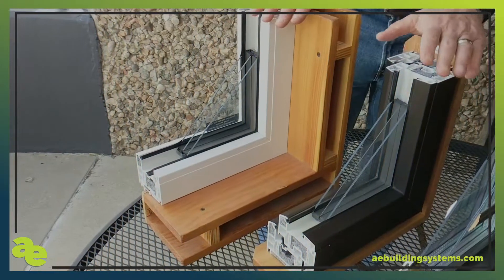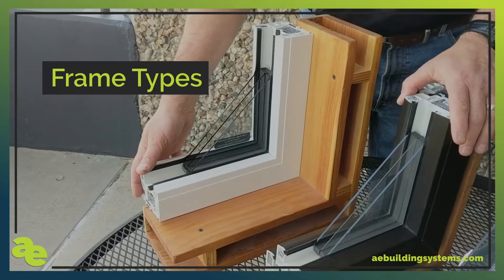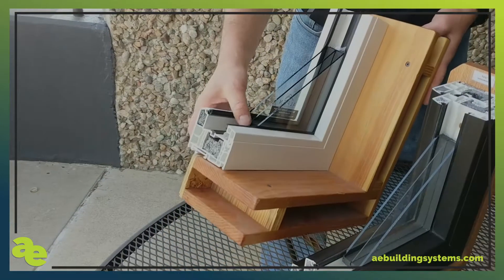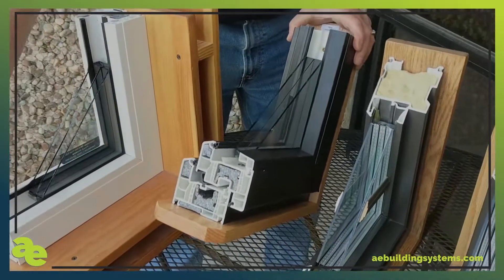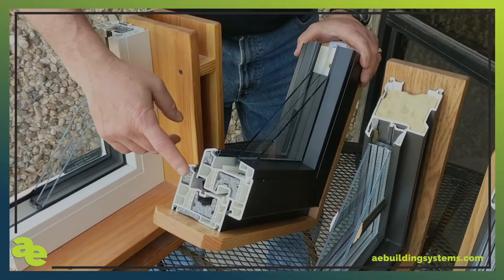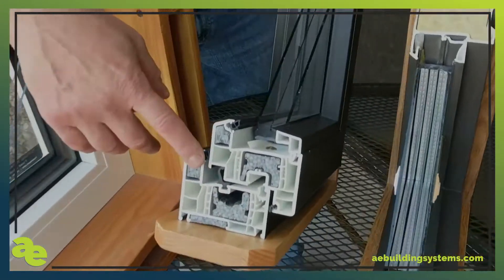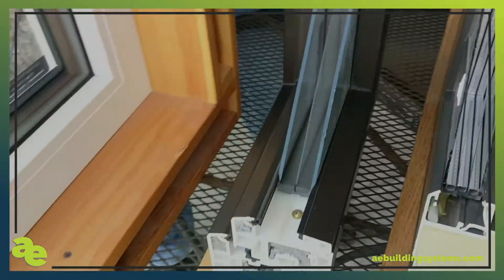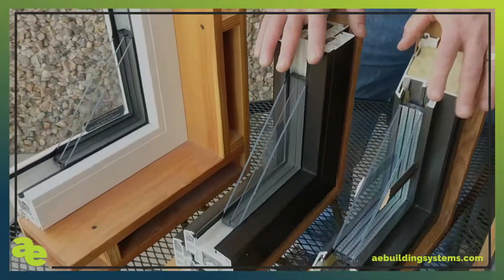What we're going to talk about in this section is the actual frame differences. This is the European style fixed unit. This is the European style tilt-roll operable unit. You'll notice we've got three seals in the European tilt-roll unit — one, two, and three. That helps to make the assembly as airtight as possible.